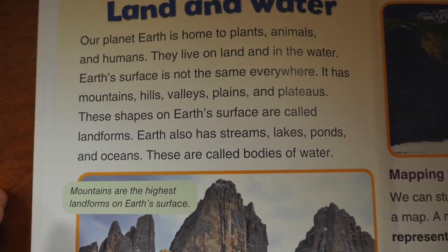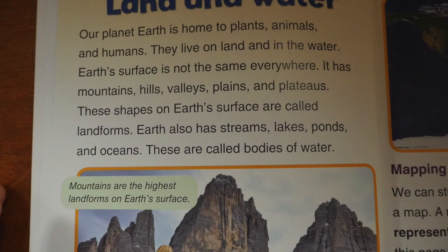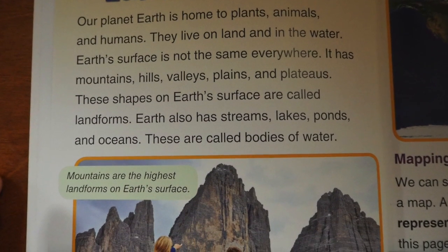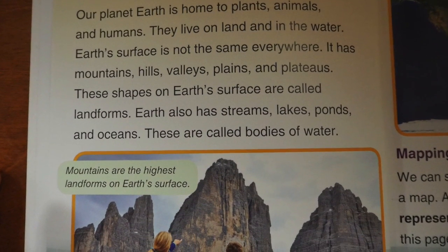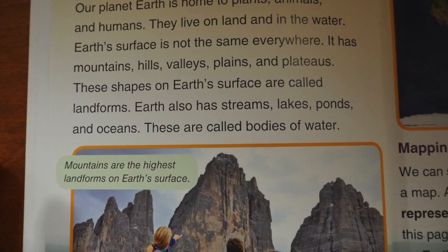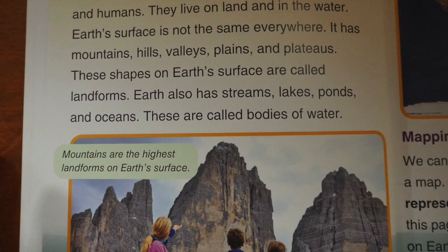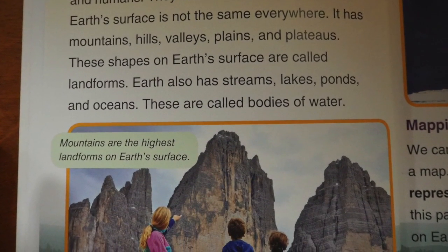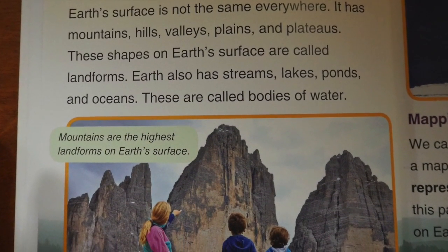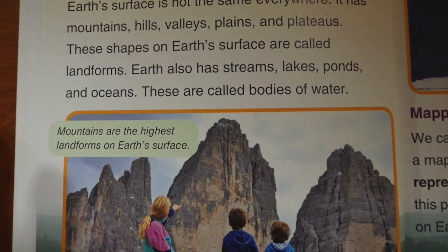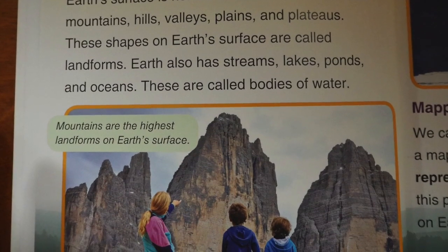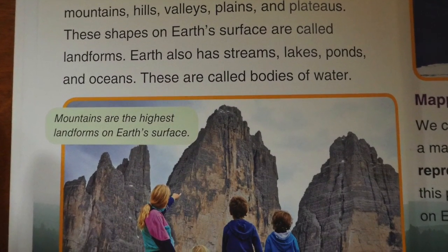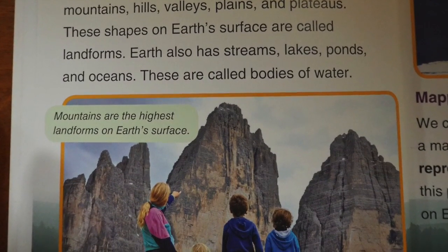Earth's surface is not the same everywhere. It has mountains, hills, valleys, plains, and plateaus. These shapes on Earth's surface are called landforms. Earth also has streams, lakes, ponds, and oceans. These are called bodies of water.